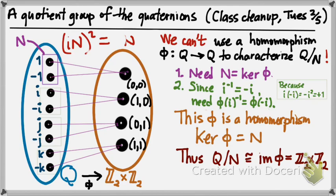Using the first isomorphism theorem is pretty slick. But in some examples, it does take quite a considerable amount of work to construct a homomorphism that actually justifies the arithmetic structure you're looking for.